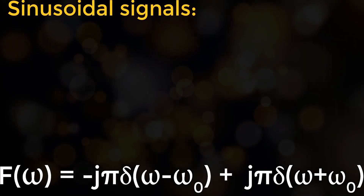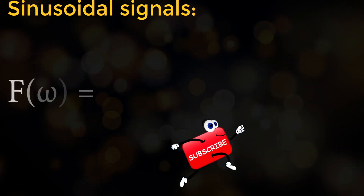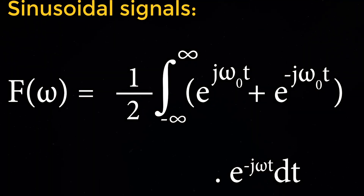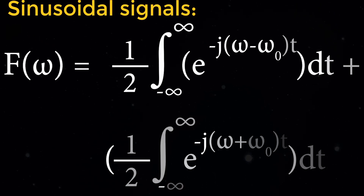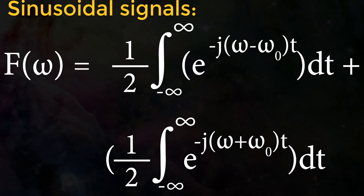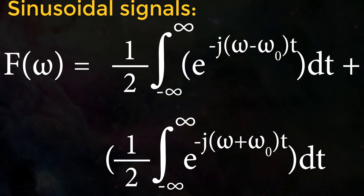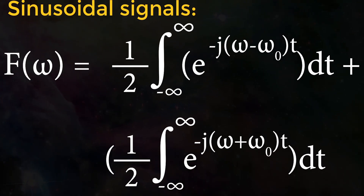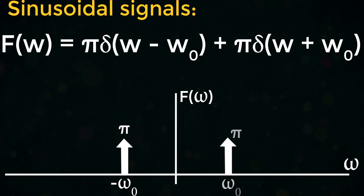For the Fourier transform of f(t) = cos(ω₀t): F(ω) = (1/2) · ∫_{-∞}^{∞} [e^{jω₀t} + e^{-jω₀t}] · e^{-jωt} dt. This equals (1/2) · ∫_{-∞}^{∞} e^{-j(ω−ω₀)t} dt + (1/2) · ∫_{-∞}^{∞} e^{-j(ω+ω₀)t} dt. Therefore, F(ω) = π·δ(ω − ω₀) + π·δ(ω + ω₀).